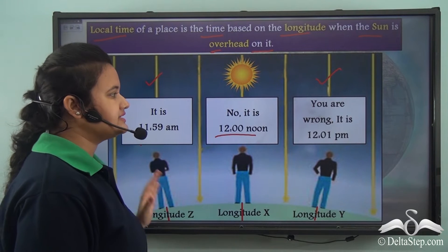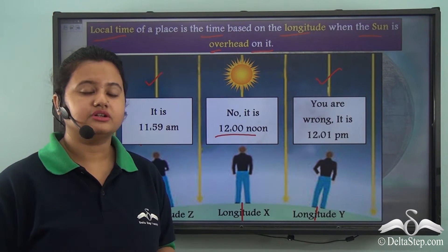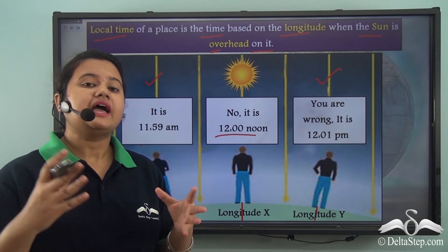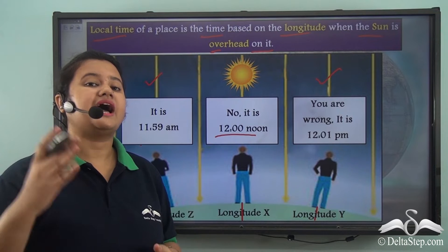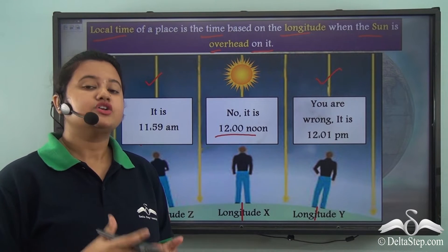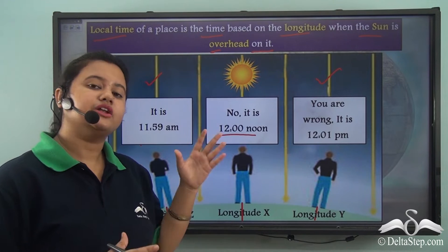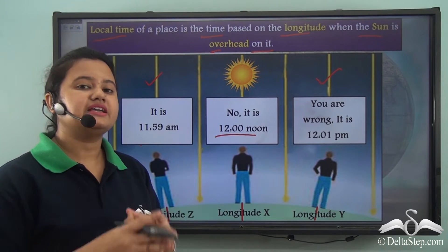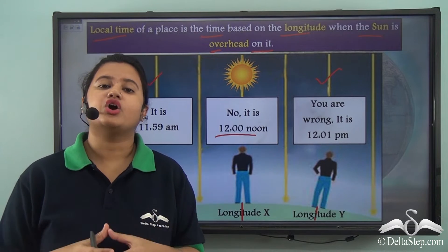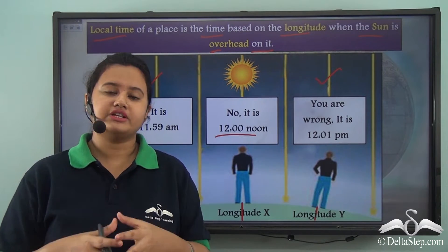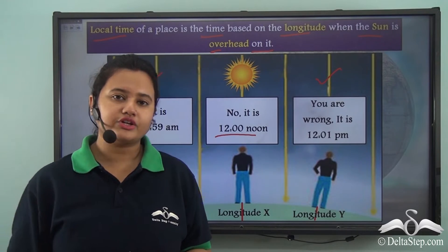We can understand from this picture that the local time of all places on the earth are not uniform. This is because the sun cannot be overhead over all the longitudes at the same time. When the sun is overhead over a particular longitude, then the local time of that place is 12 noon. So, local time of different places varies according to the position of the sun. How much is the time difference between local times of different longitudes?